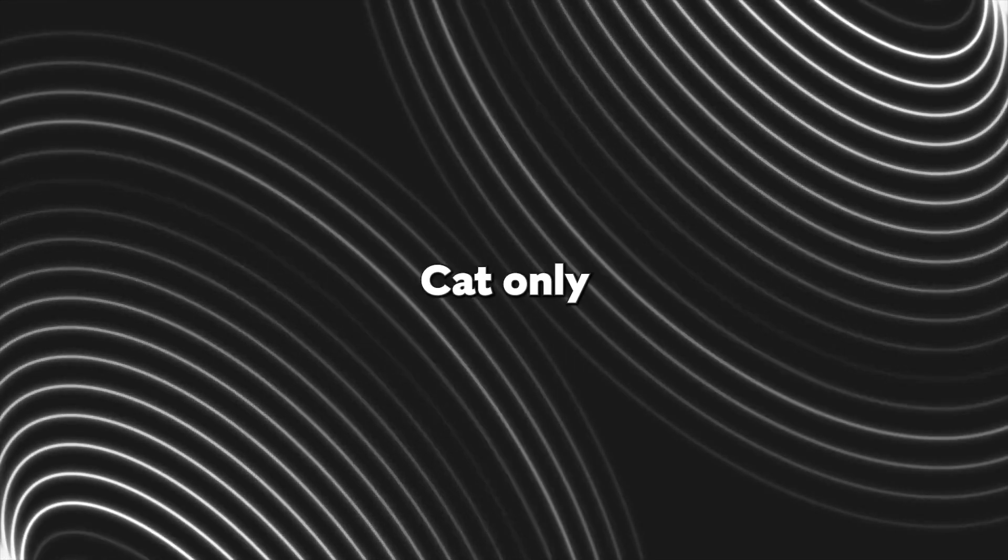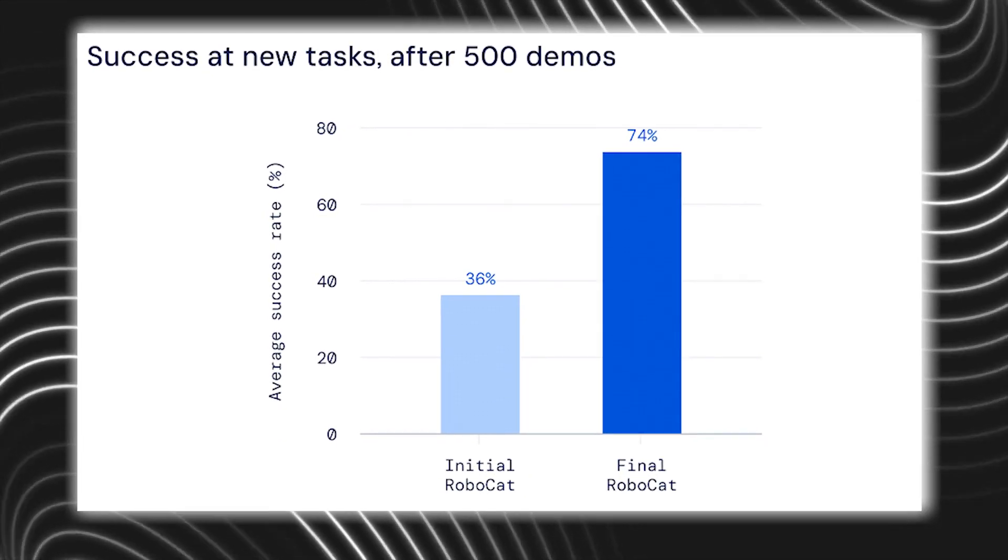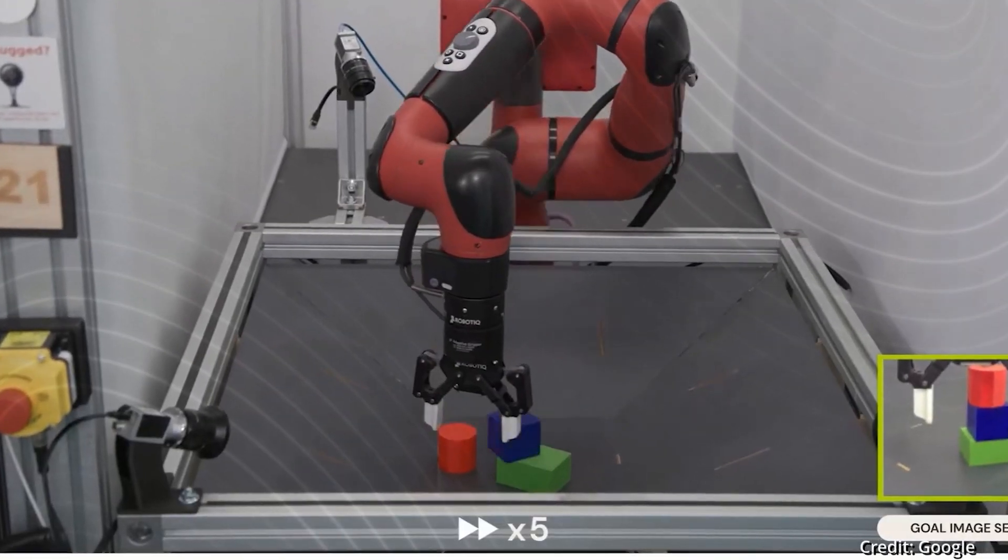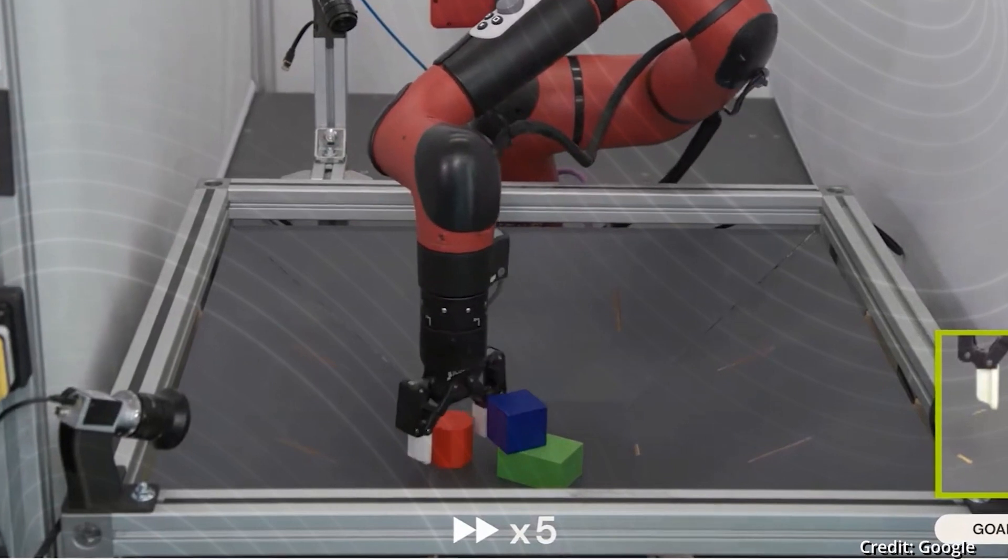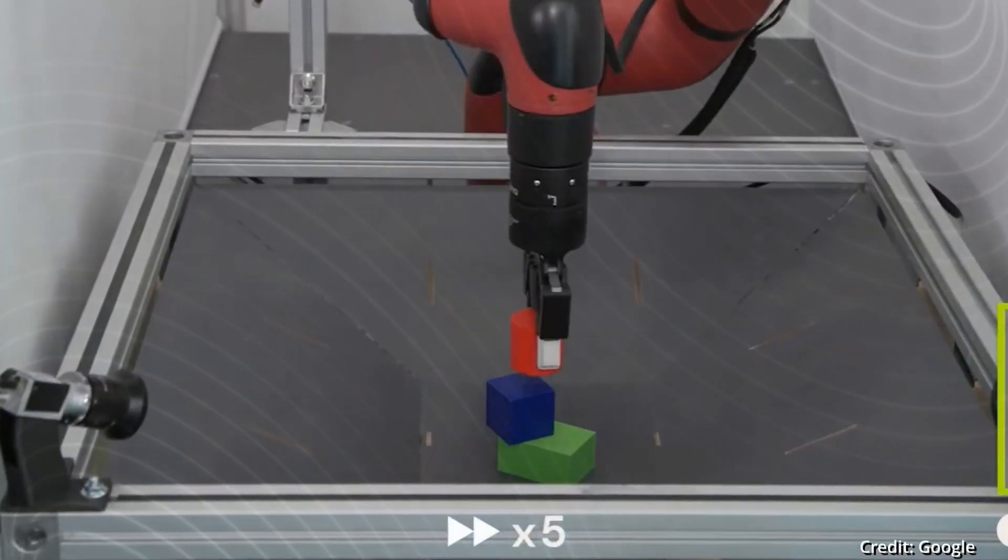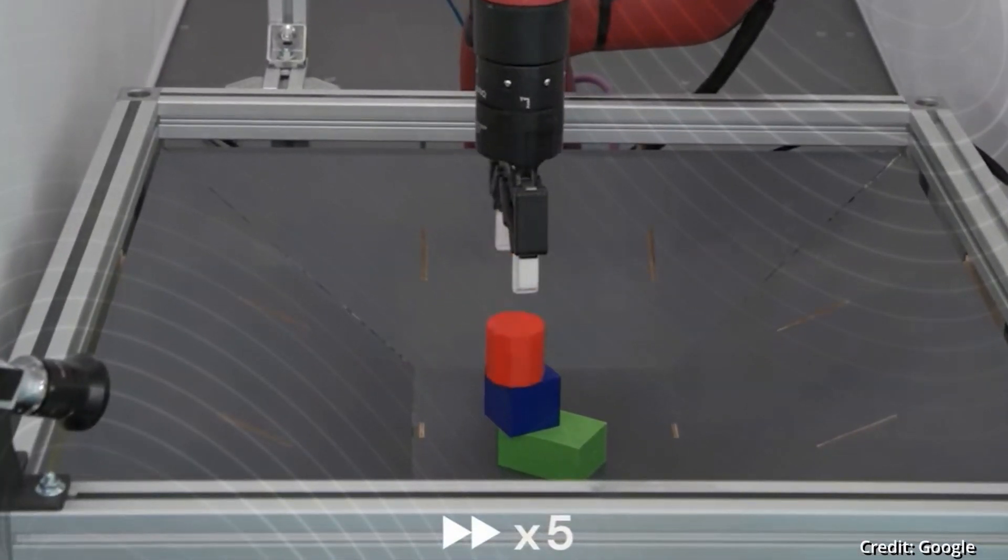The initial version of RoboCat only achieved a 36% success rate in previously unseen tasks. Bear in mind it only learned from 500 demonstrations per task, but the latest iteration of RoboCat, which has been exposed to a wider range of tasks during training, has more than doubled its success rate on those same tasks.